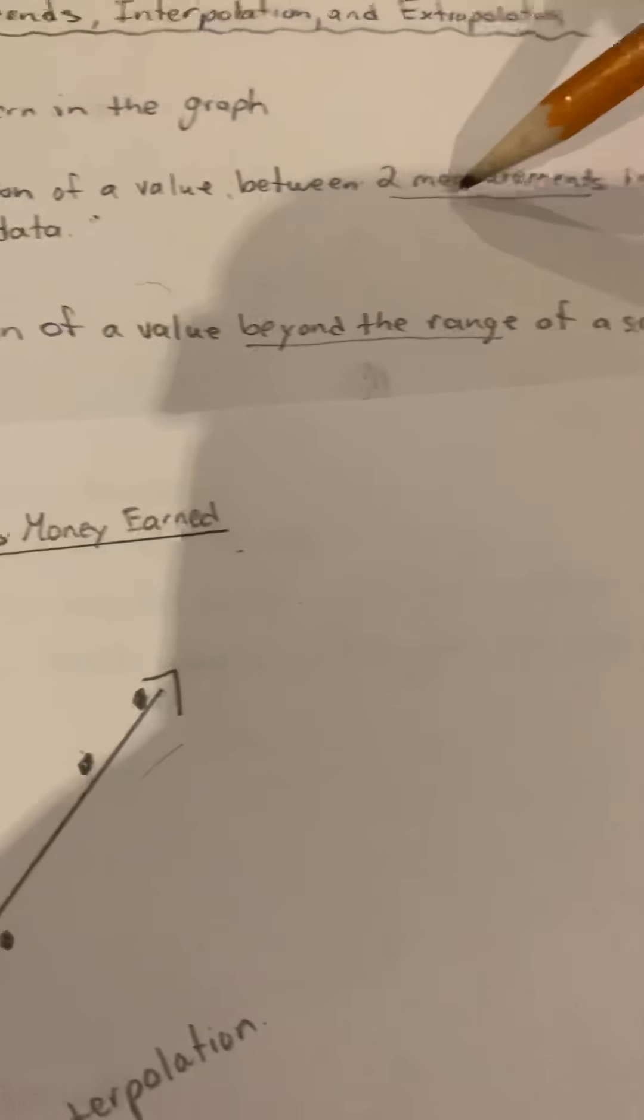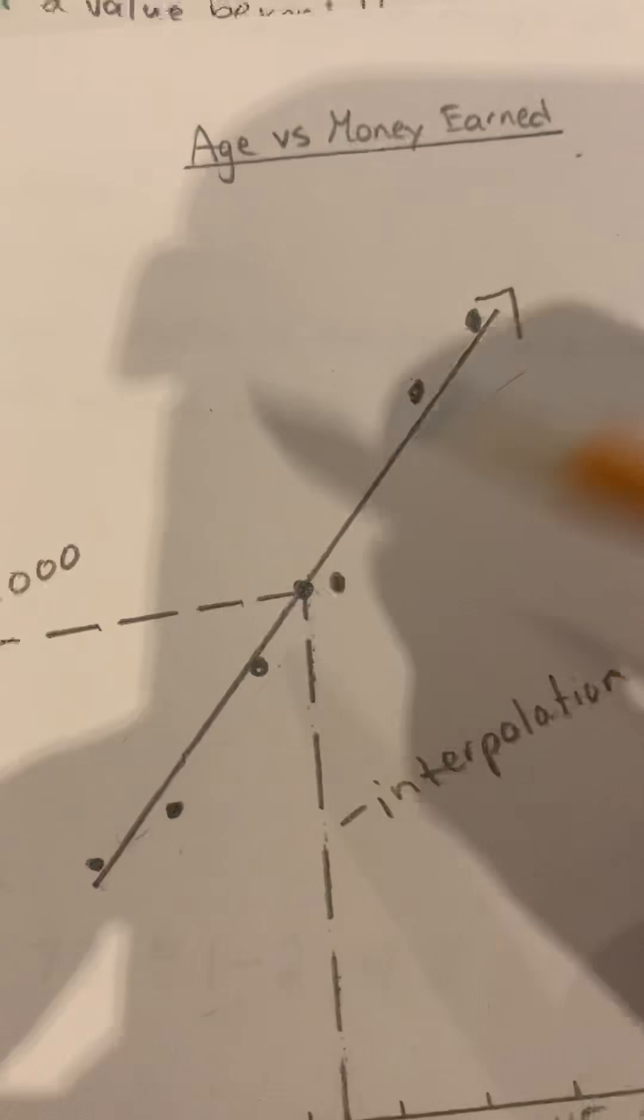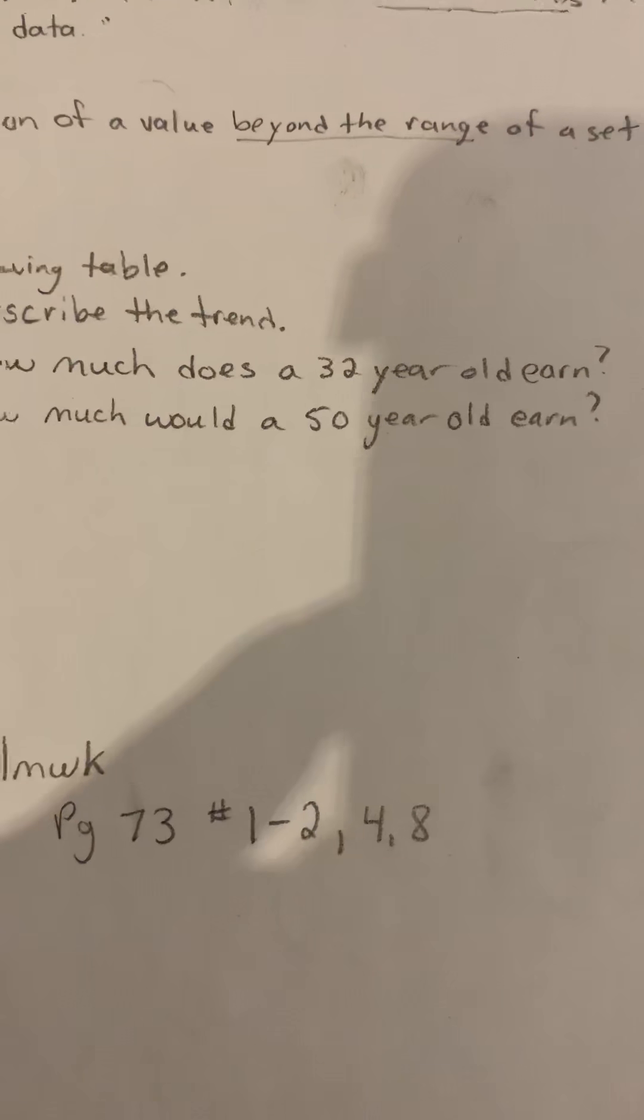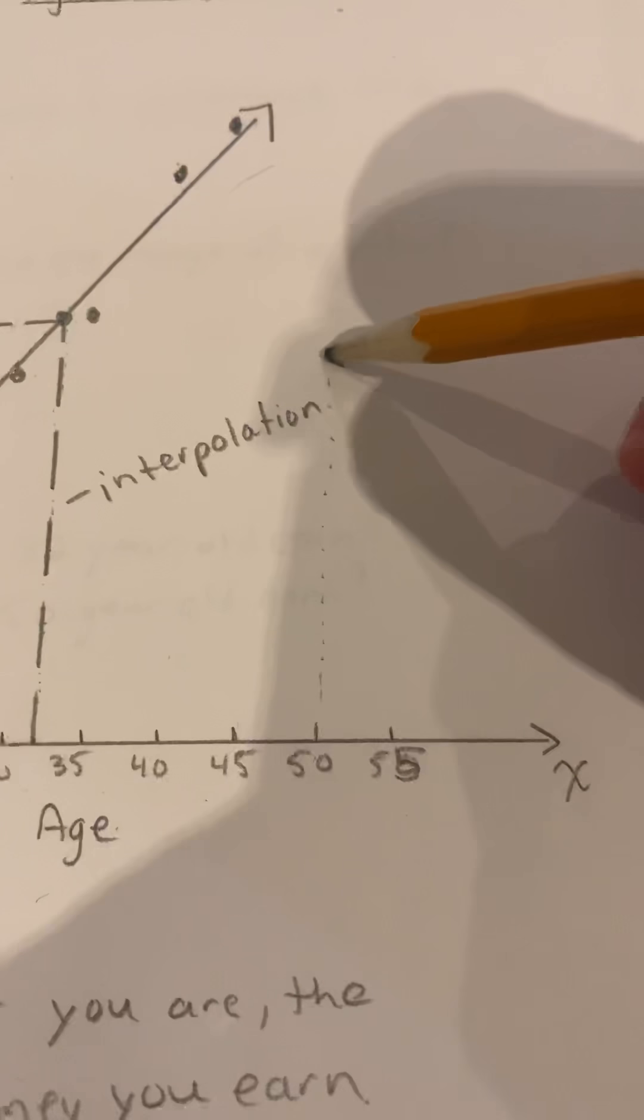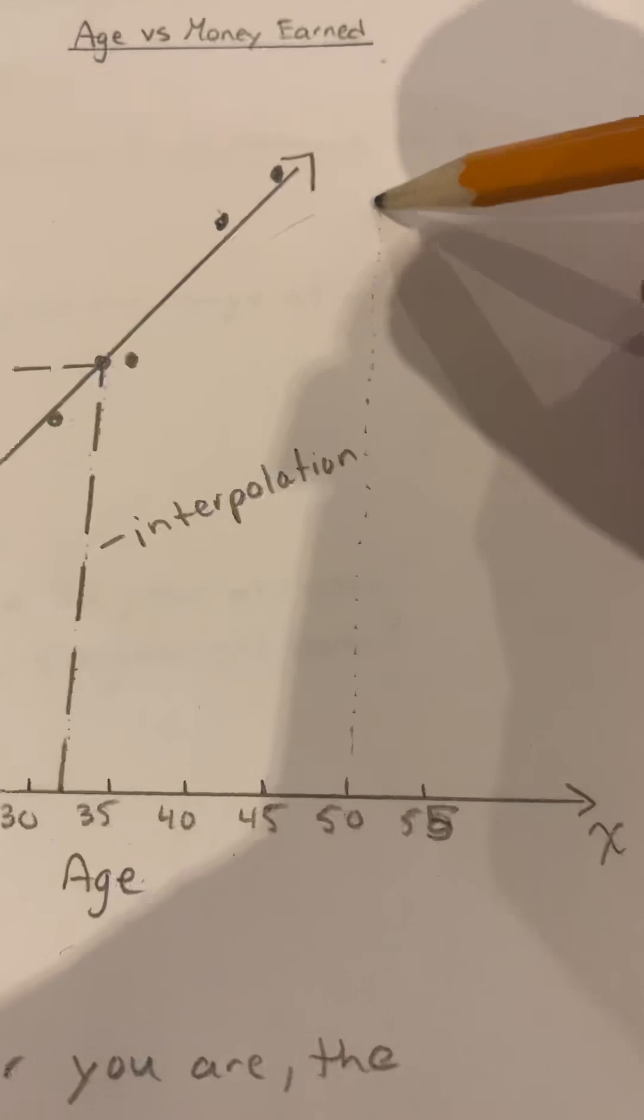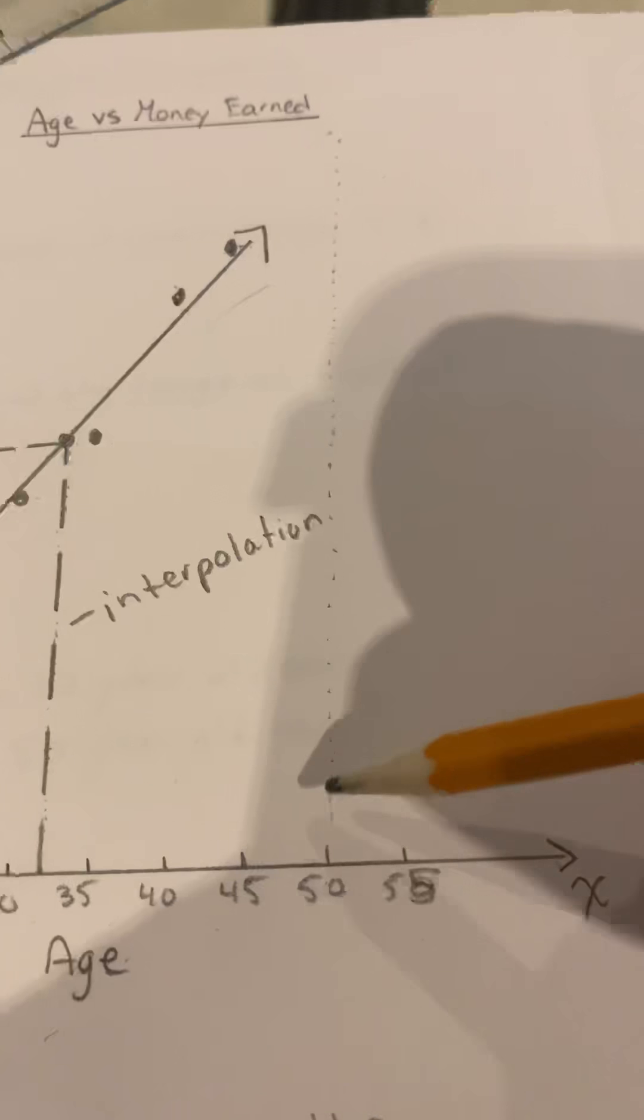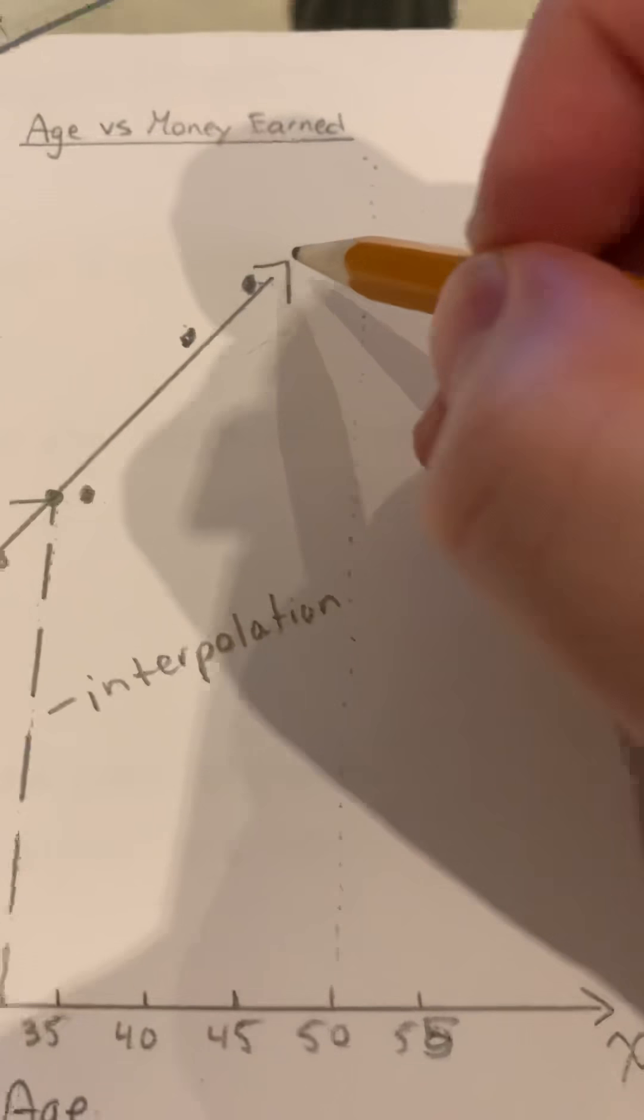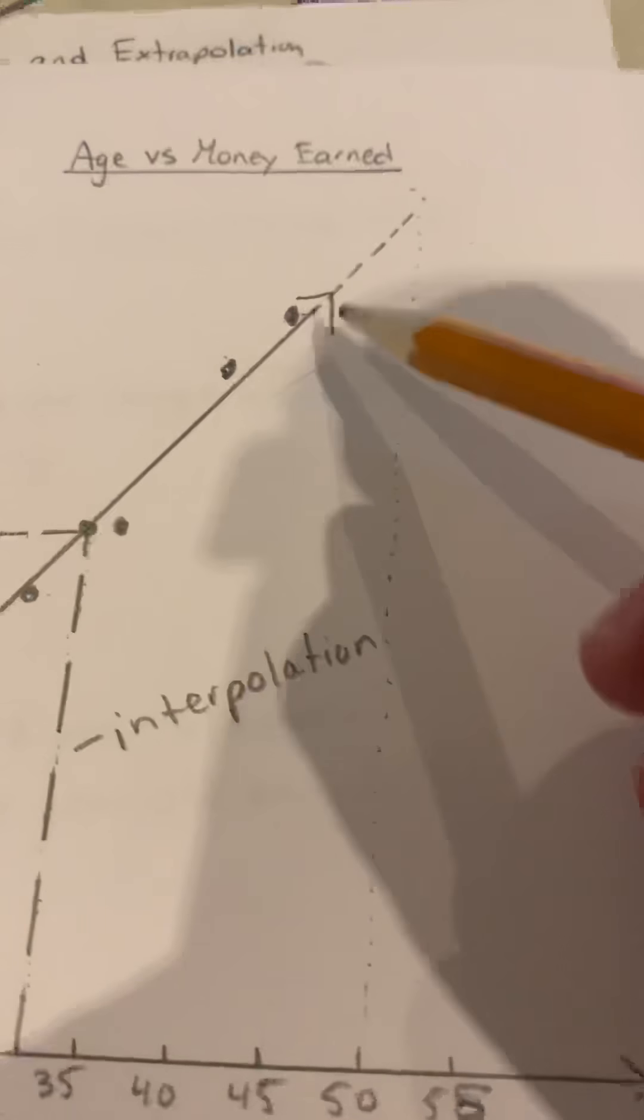Now we're going to do the last part of the question, which is how much would a 50-year-old earn? So we have 50 and again we're going to draw a line upwards, a dotted line up towards our line of best fit. But you will notice that if I do that I never touch the line. Our line stops where our last point is. So if I draw a dotted line upwards I don't actually touch the line of best fit. So what we need to do is we need to extend the line of best fit. This extension here is the extra part, so extrapolation. We're doing extra here, so extrapolation, or extending our line.